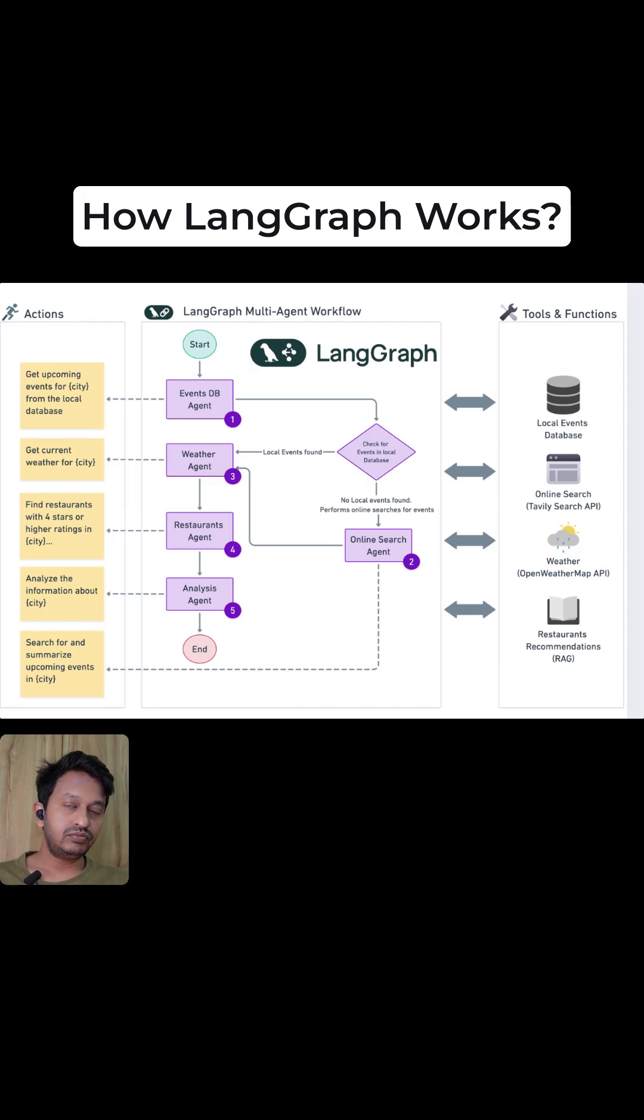LangGraph can do deterministic workflows, graph-based control flow, state updates after each step. Conditional routing is also possible. It can do retry logic and tool calling is built in with LangGraph, which is not possible if you just use LangChain.